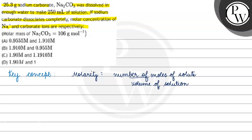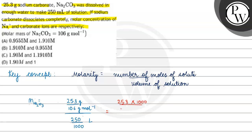If we talk about the molarity of Na₂CO₃, the number of moles equals mass divided by molar mass. The volume of solution is 250 mL, which is 250 divided by 1000 liters. So the molarity is 25.3 × 1000 divided by 106 × 250 mol per liter.